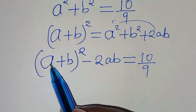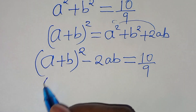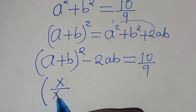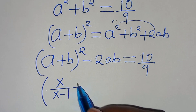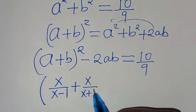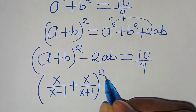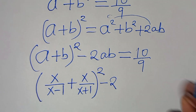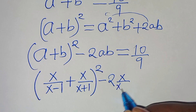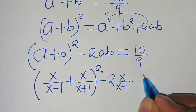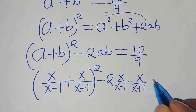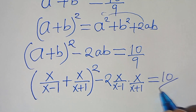Now let's substitute the value of a, which is x/(x-1), plus b, which is x/(x+1), raised to the power of 2, then subtract 2 multiplied by a, which is x/(x-1), multiplied by x/(x+1). This is equal to 10/9.